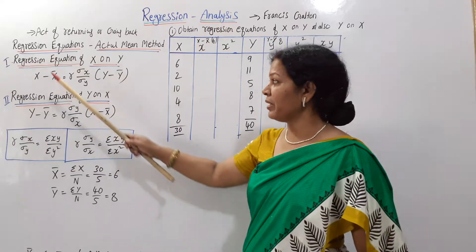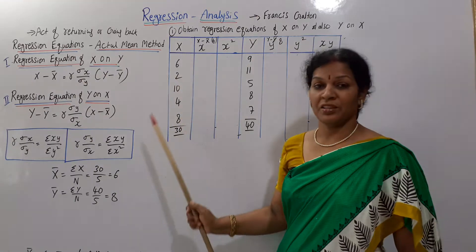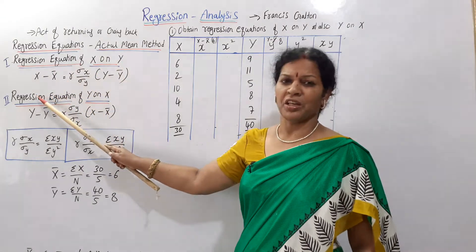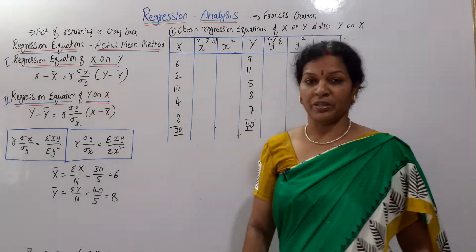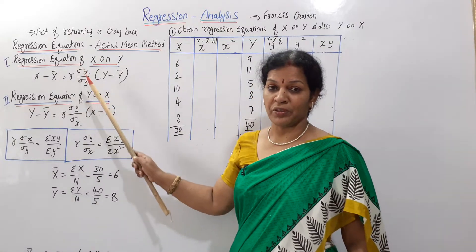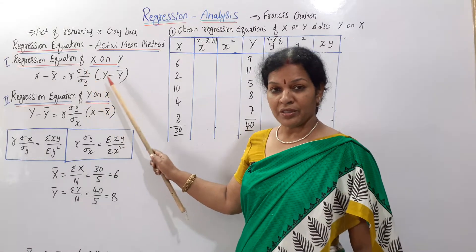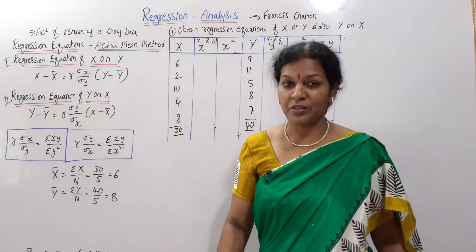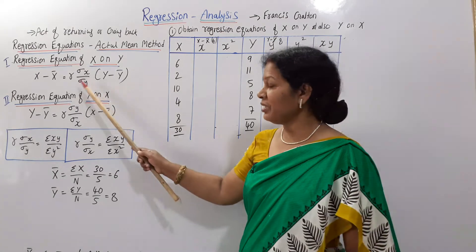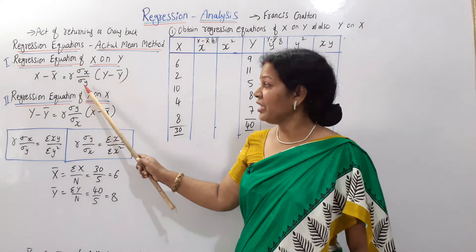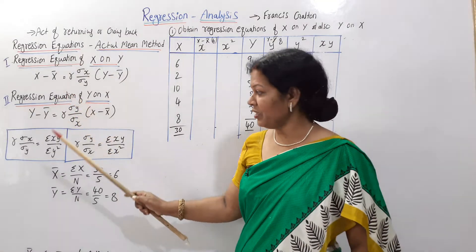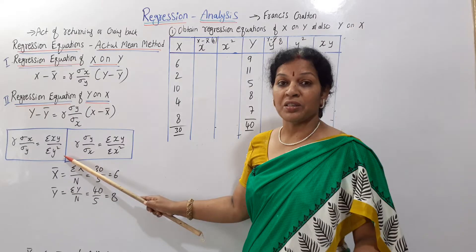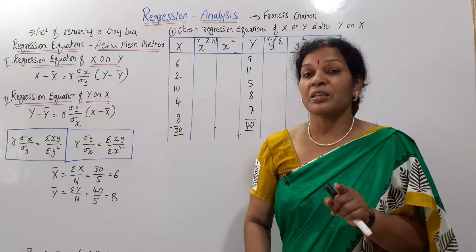The regression equation of x on y starts with x. The formula is: x minus x̄ equals r times (ρx / ρy) times (y minus ȳ). Here r means correlation, ρx is standard deviation of x, and ρy is standard deviation of y. This is equivalent to σxy divided by σy².